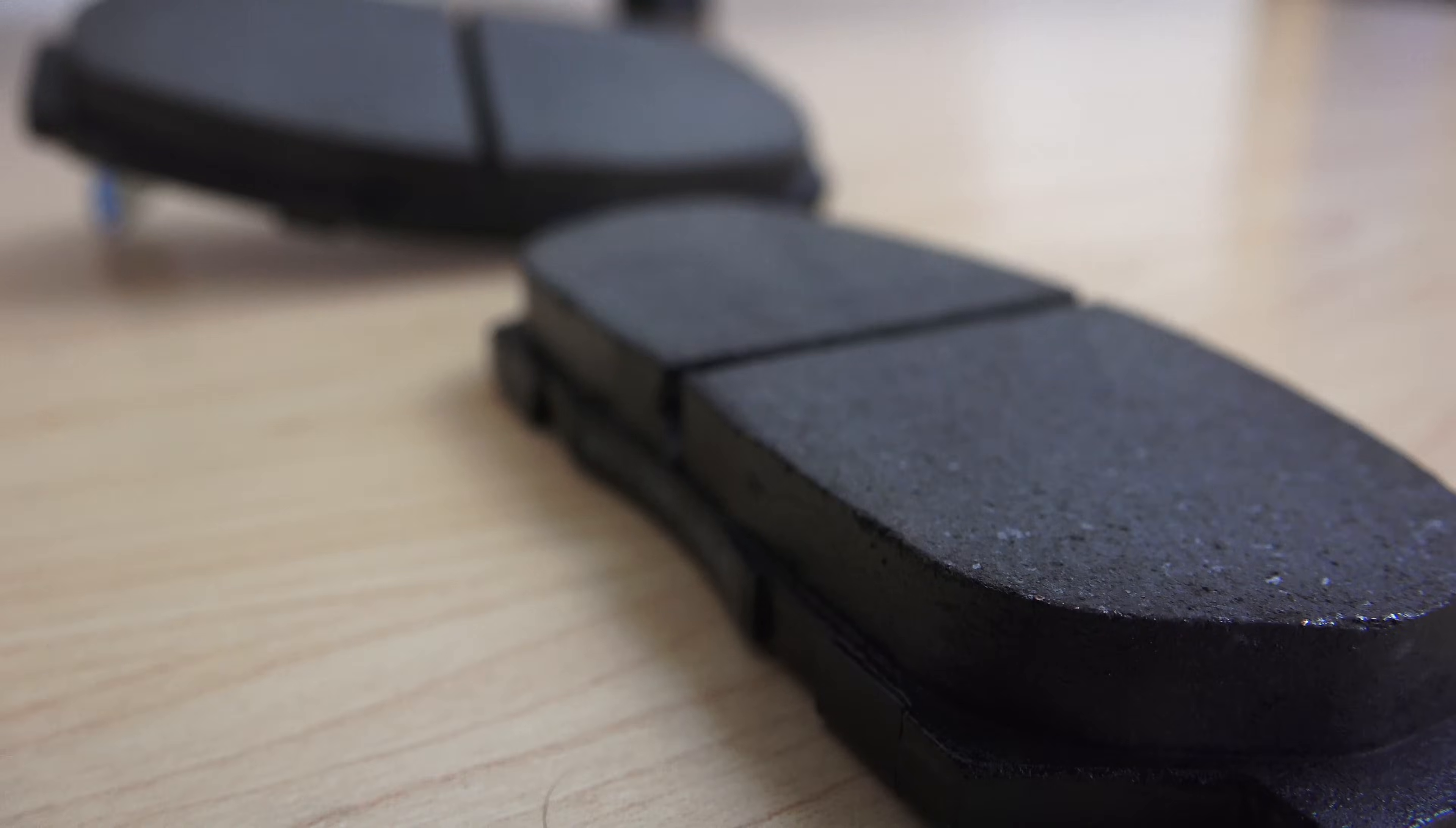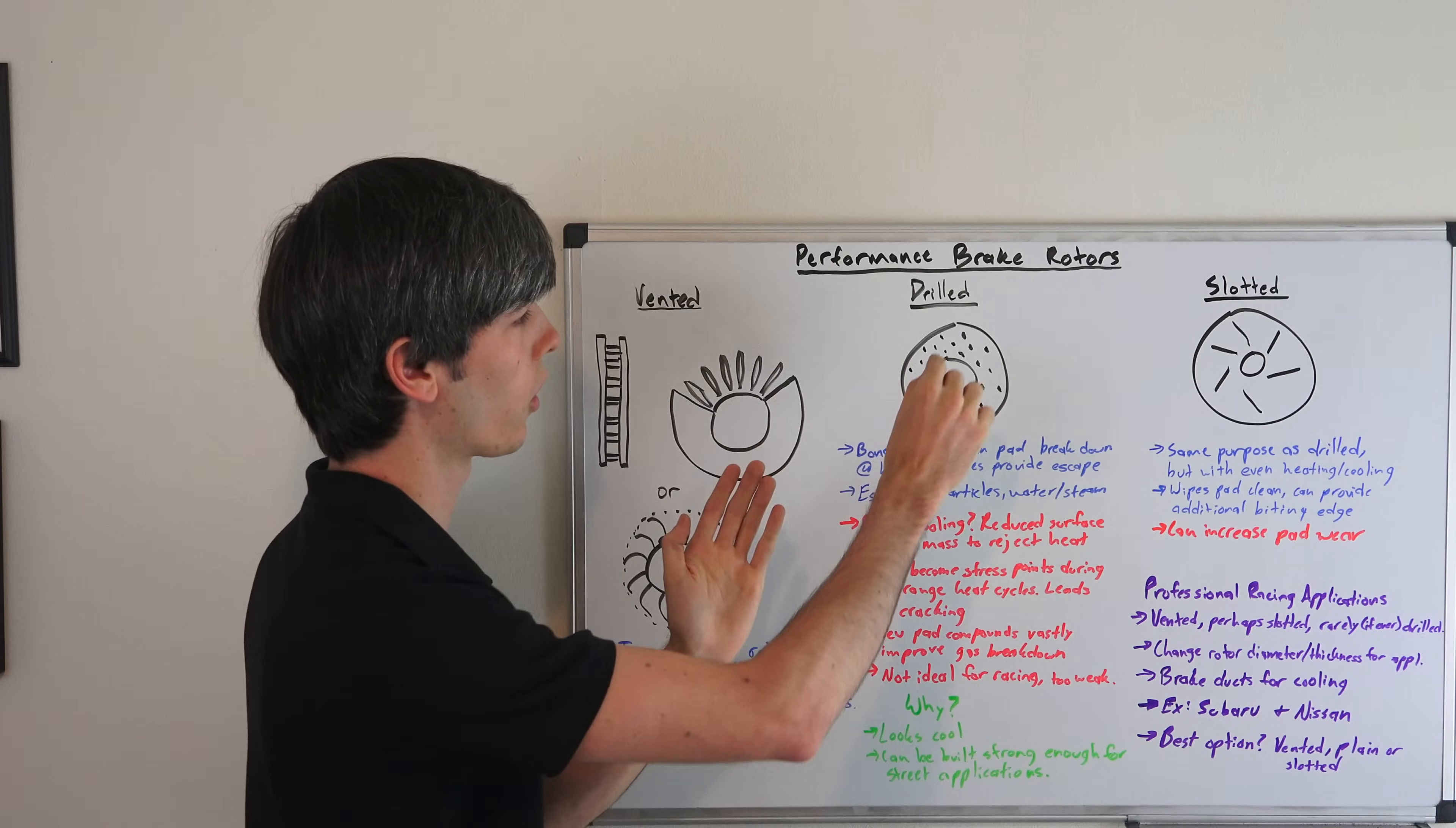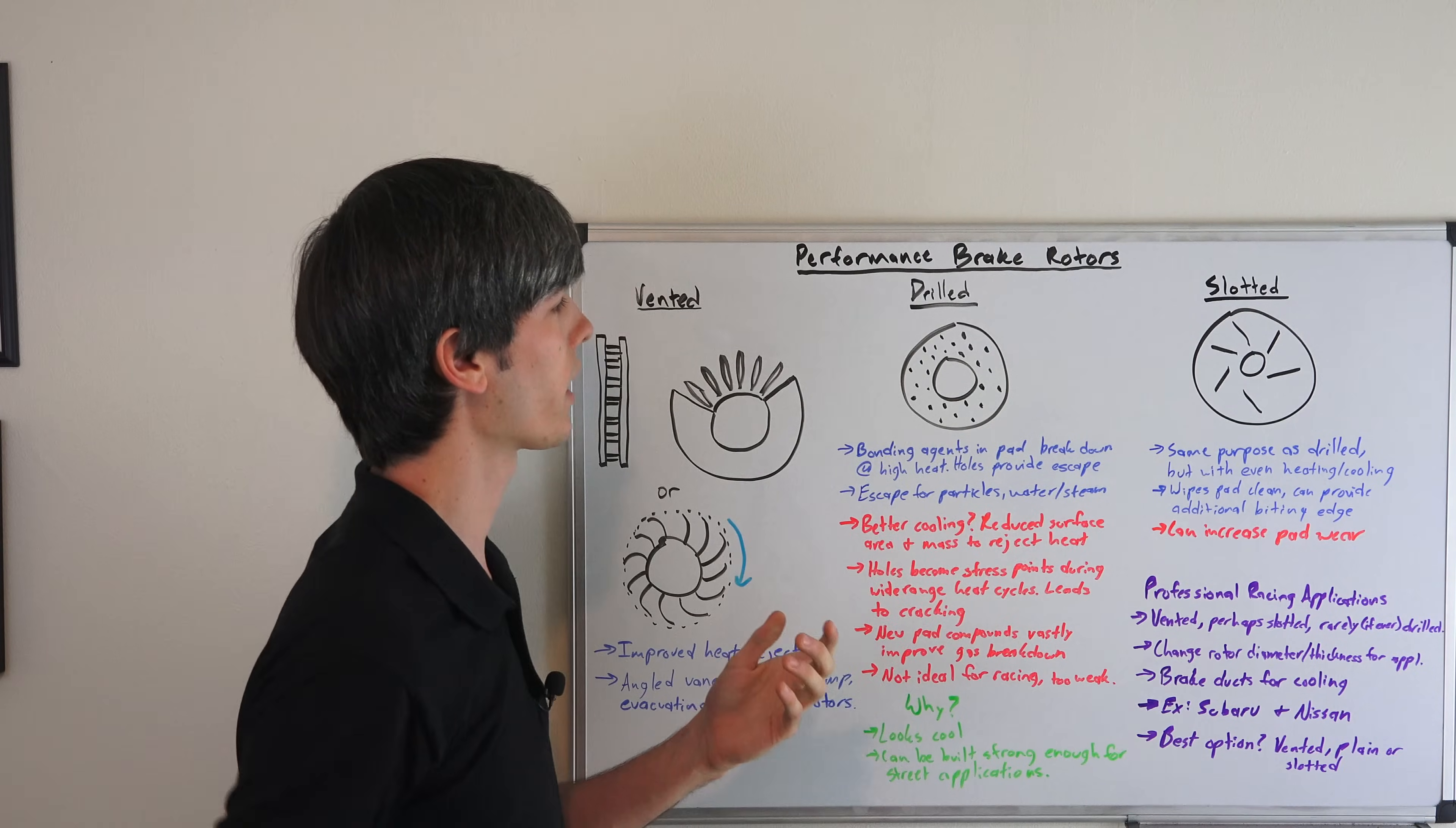Modern pads use different materials and aren't quite as bad. As these bonding agents break down, they create a layer of gas. That layer of gas prevents your pad from touching the rotor because of the pressure in between. So these holes allow for that gas to travel out, as well as any particulate debris from the pads themselves. If you get any water or steam on it, this helps that evacuate through these holes.